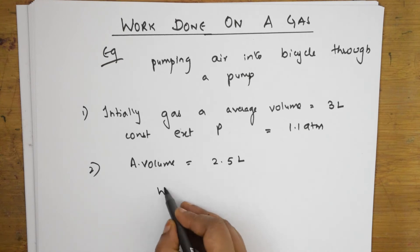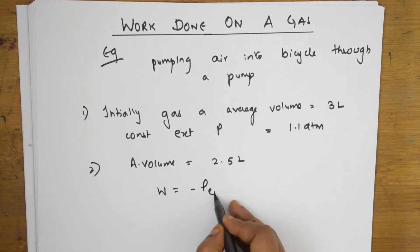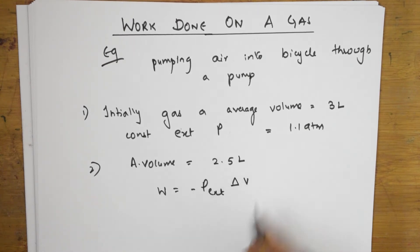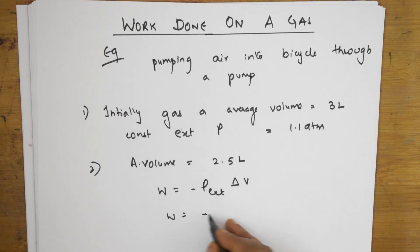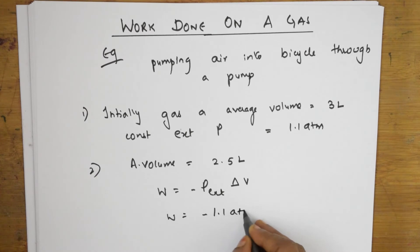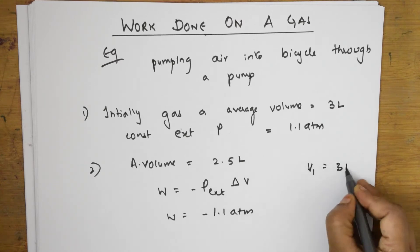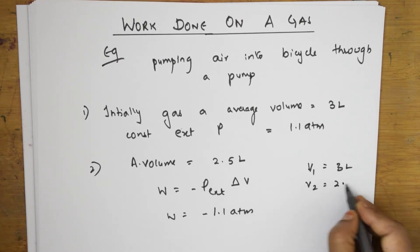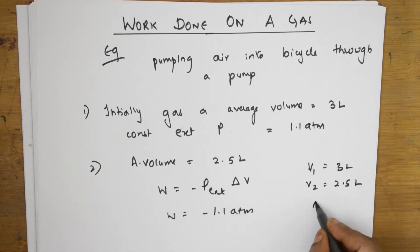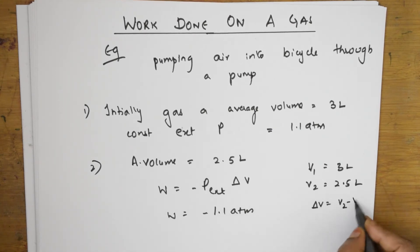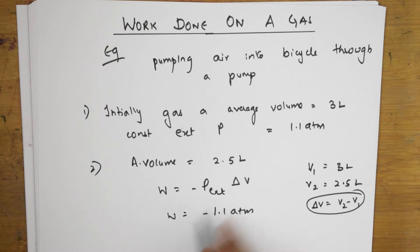Now, let us take W is equal to minus P external into delta V. Earlier formula which I have told you what is P external and delta V. So, W is equal to, how much is P external? 1.1, isn't it? Minus 1.1 atm. How much is delta V? Initially, the initial V1 was 3 liters. V2 is 2.5 liters. Now, delta V is equal to V2 minus V1, correct?